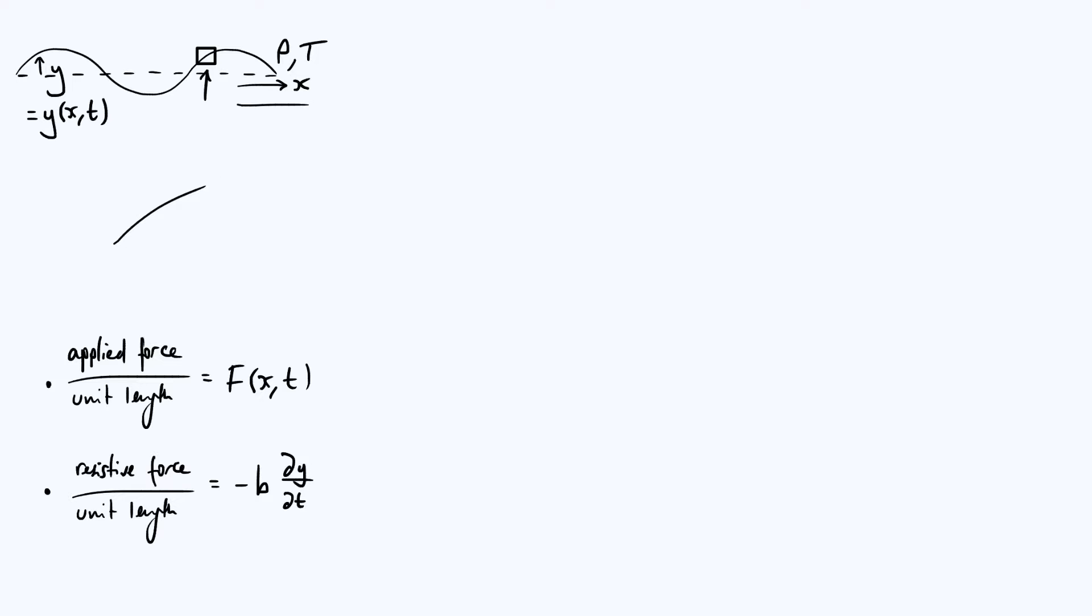Let's draw all the forces that are acting on this string element. We've got a tension which is always acting along the string, so you've got tension T pulling in that direction, and the same, under the assumption of constant tension, you've got the same tension pulling down on the other end as well, but it's acting in a slightly different direction because the string is curved.